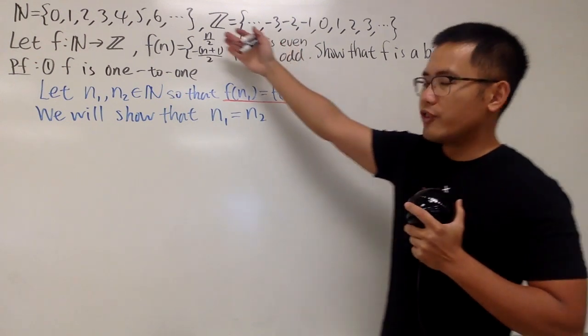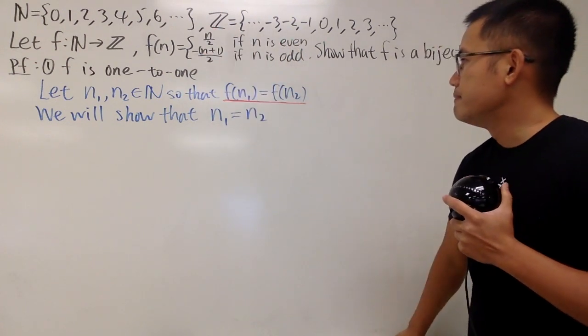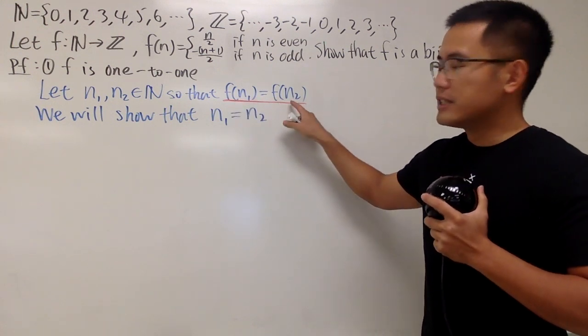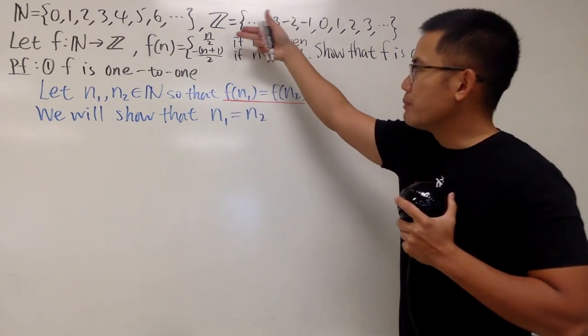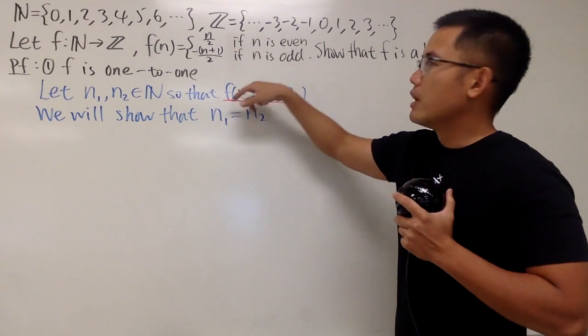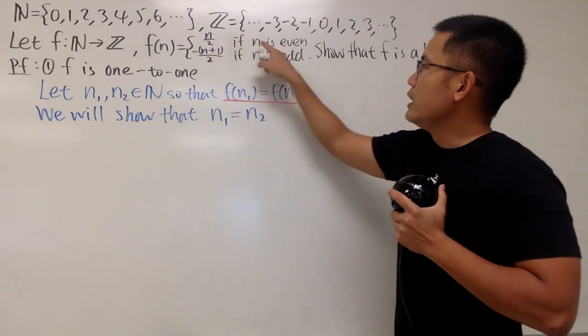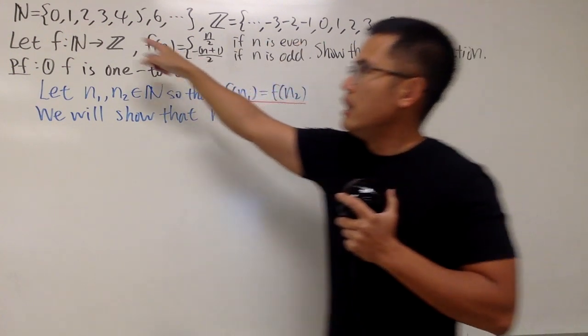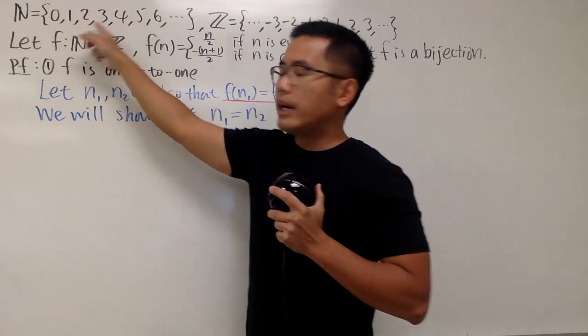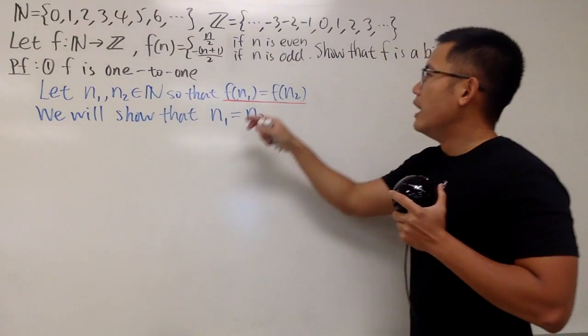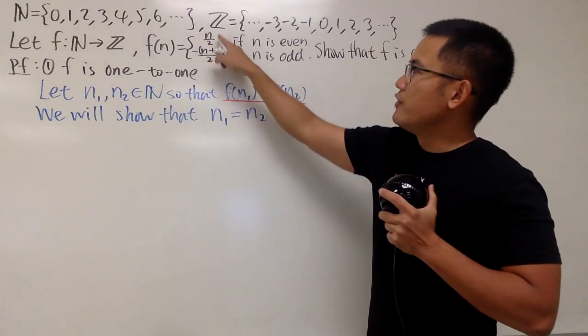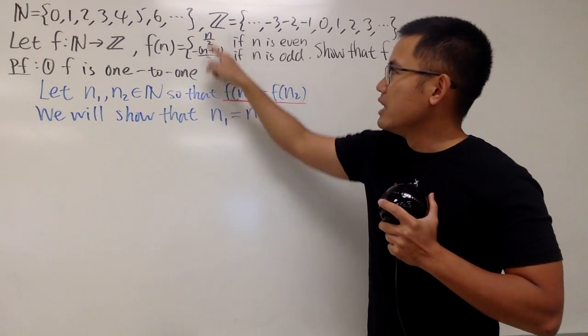So this right here is our blueprint in blue to show that f is a one-to-one function. So now, let's continue. We have this part already, and this is what we are trying to achieve. Focus on this part, because this is the property that we have. They have the same output. So, of course, we are going to refer back to the function.